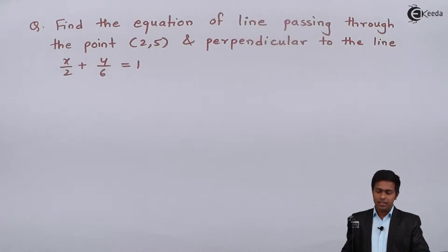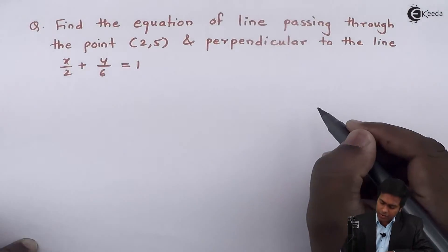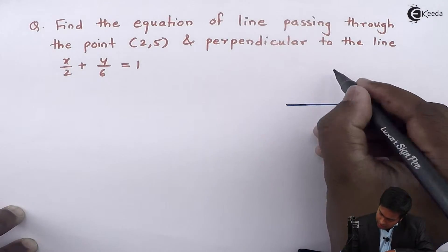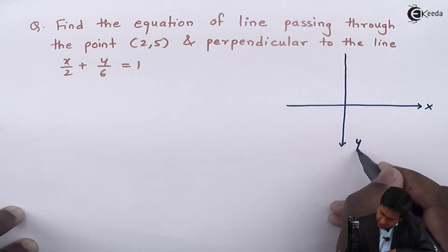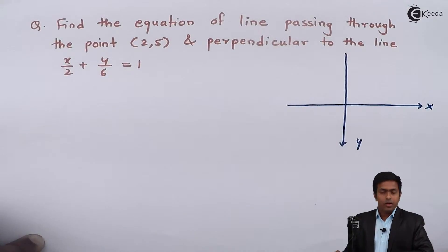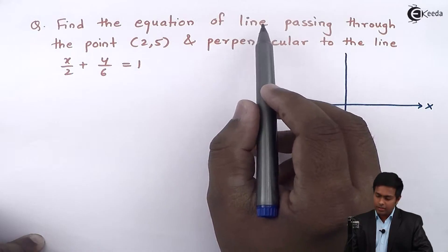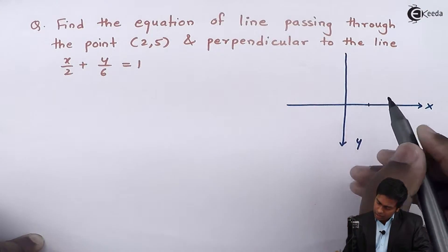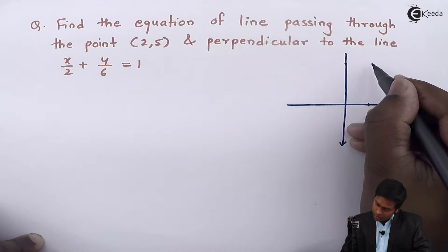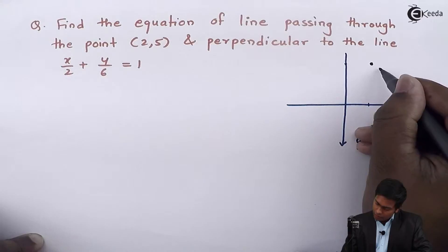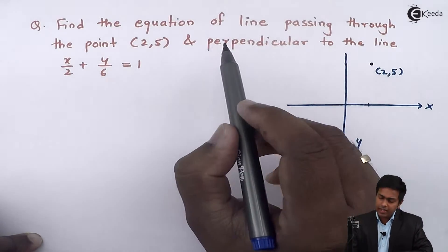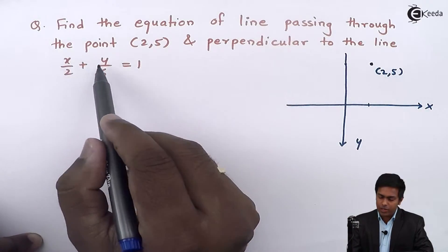Before finding the equation of the line, let's visualize how this line would look. Let's draw the x-axis and y-axis. The required line is passing through the point (2, 5) — so here 2 on the x-axis and 5 on the y-axis — this is the point (2, 5).